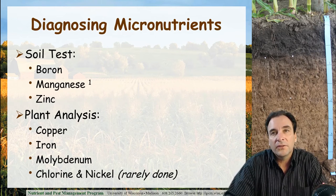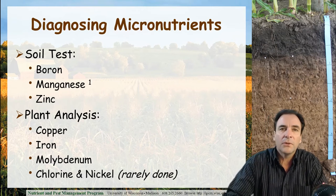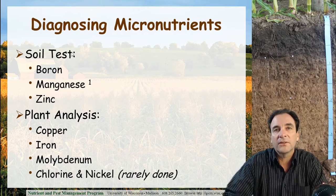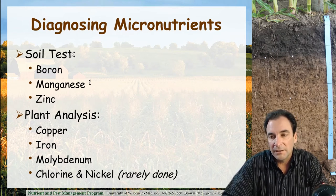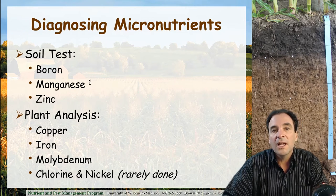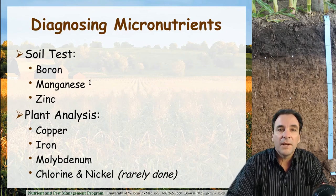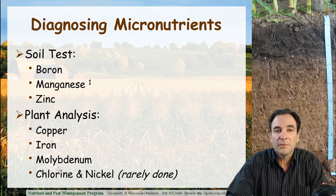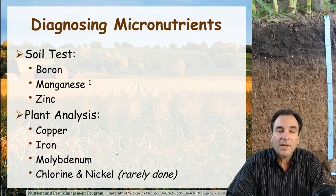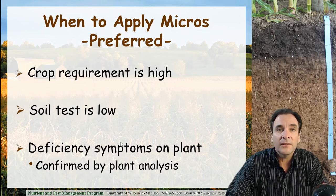How do we diagnose our micronutrients? For the ones we're most concerned about — boron, manganese, and zinc — we have soil tests that will evaluate and look for the optimum level of these nutrients in the soil profile. For some of the other micronutrients — copper, iron, molybdenum, chlorine, and nickel — plant analysis is done rather than soil analysis.